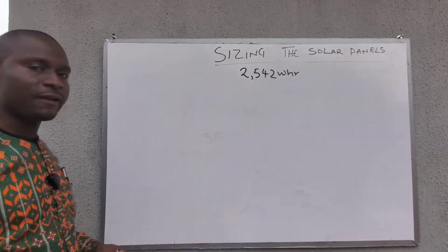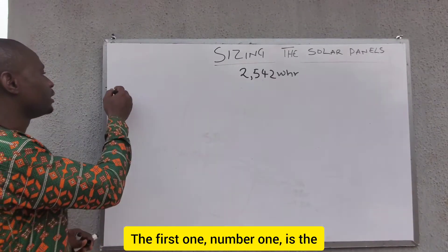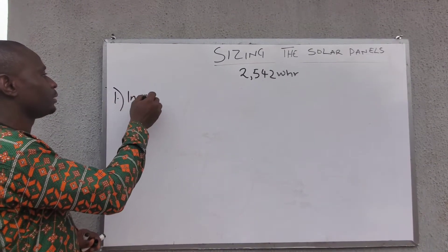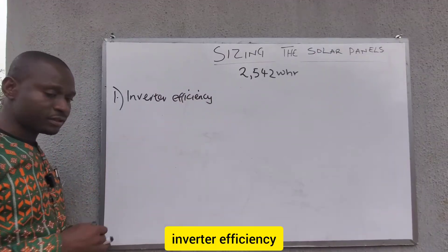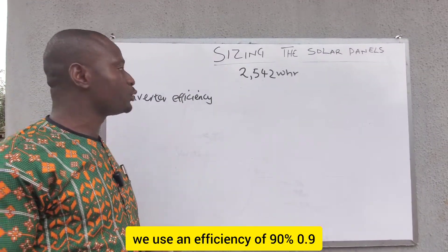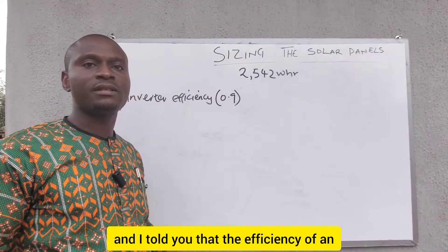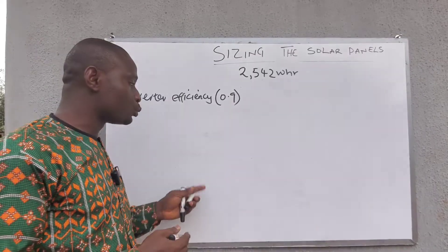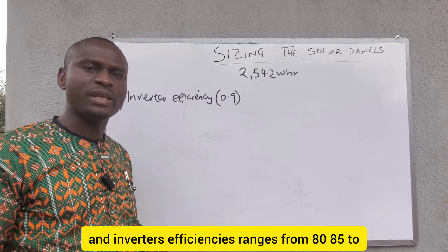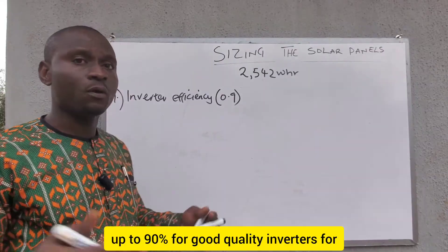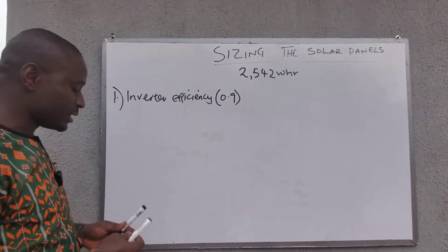To size the solar panels, there are a few things we need to take into consideration. The first one is the inverter efficiency. If you watched the previous video, we used an efficiency of 90% (0.9). The efficiency of an inverter is its ability to smoothly convert DC to AC without much loss. Inverter efficiency ranges from 80% to 90% for good quality inverters. For this calculation, we are using 90%.